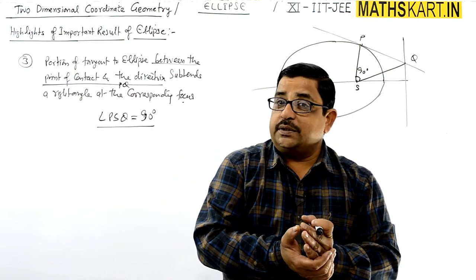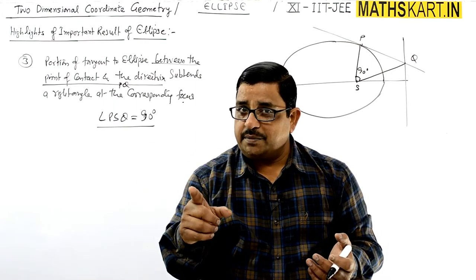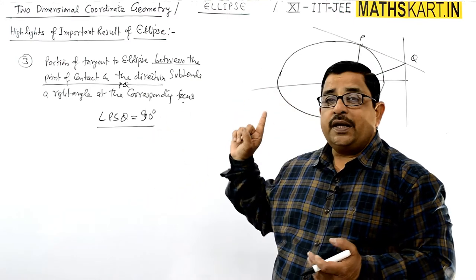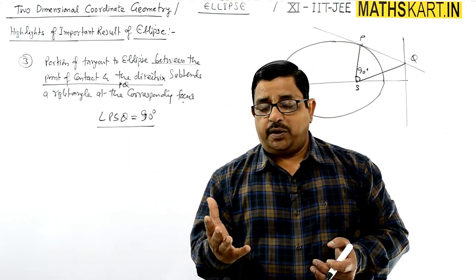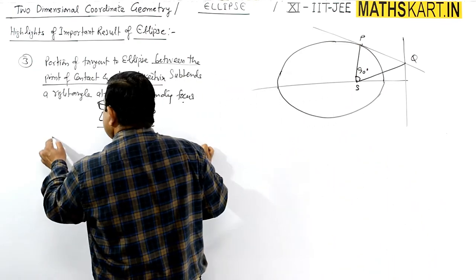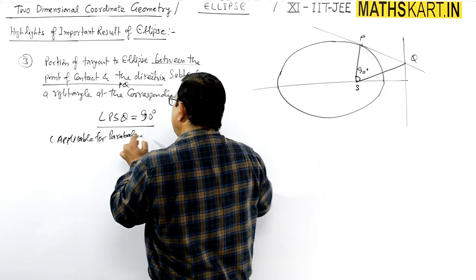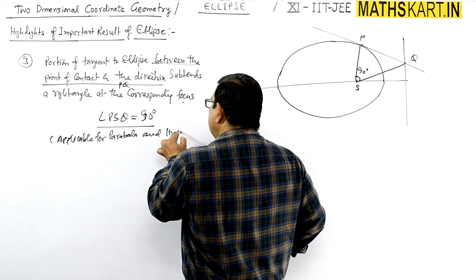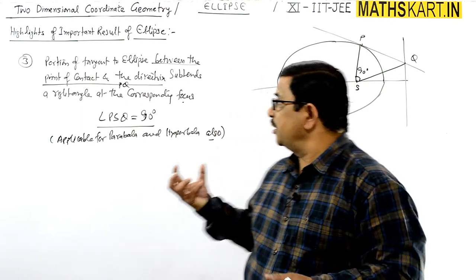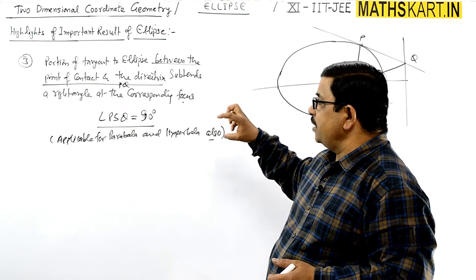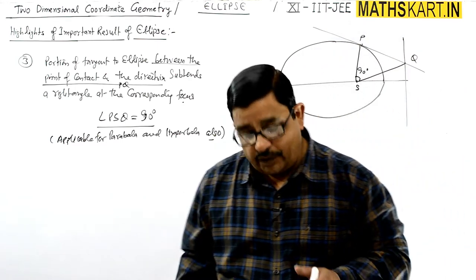This angle is 90° in all cases — for parabola, ellipse, and hyperbola. The circle doesn't have a directrix in the same sense, but for all conic sections with a focus and directrix, this property applies: the segment from point of contact to the directrix subtends a right angle at the corresponding focus.